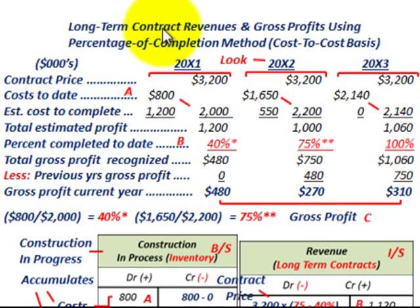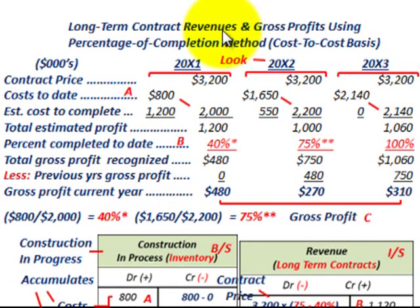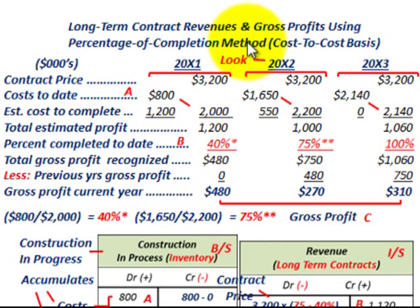What we're going to be looking at here is a long-term contract. We're going to be looking at the revenues and the gross profits on this contract, and also how we record it on our balance sheet and our income statement. We're going to be using the percentage of completion method on this contract, and it's going to be based on a cost-to-cost basis.